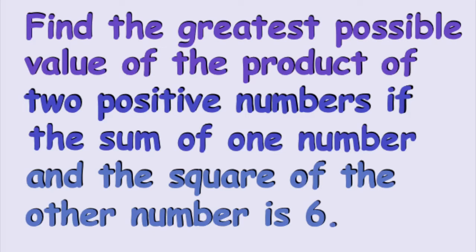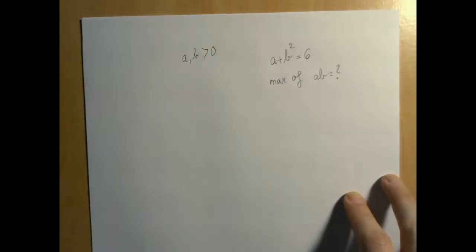Suppose we have two positive numbers A and B, and we know that the sum of one number and the square of the other is 6, and we have to find the greatest possible value of their product.